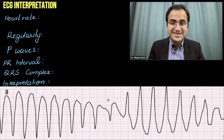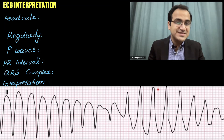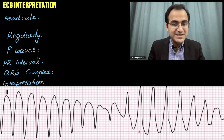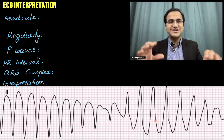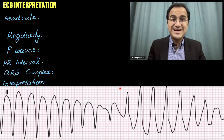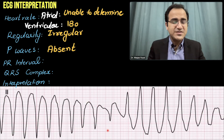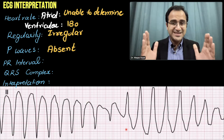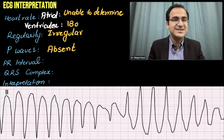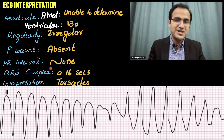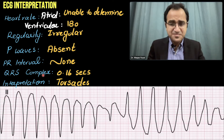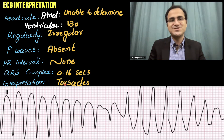Looking at this second ECG, these are the pointed ends and these are the rounded ends — confirming the twisting of the points, torsades de pointes. The atrial rate is unable to be determined. Using the same six-second method, the ventricular rate is 180 beats per minute. Regularity is irregular, P waves are absent, there is no PR interval, QRS complex is wide, and the interpretation is torsades.